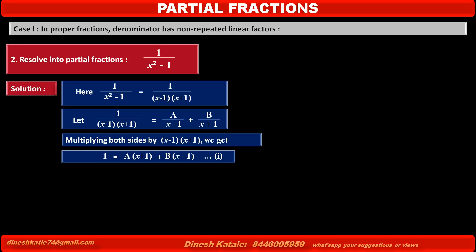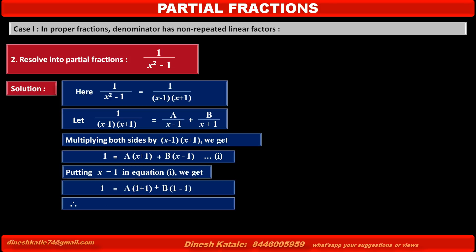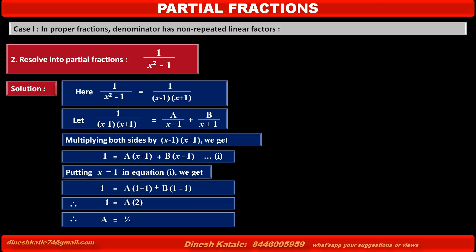To find the value of A, we eliminate the term containing B. Putting x equal to 1 in equation 1, we get 1 equals A into 1 plus 1 plus B into 1 minus 1. The second term becomes 0, so 1 equals A into 2. Therefore, the value of A is equal to 1 by 2.